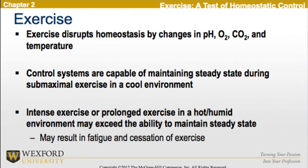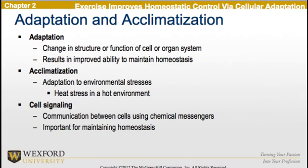Talking about exercise, exercise actually disrupts the homeostasis of the body by changes in pH, oxygen, carbon dioxide, and temperature. Control systems are capable of maintaining steady state during submaximal exercise in a relatively cool environment. However, intense exercise or prolonged exercise in a hot or humid environment may exceed the body's ability to maintain a steady state. This may result in fatigue and having to quit the exercise. Exercise can actually improve homeostatic control in the body via cellular adaptation.